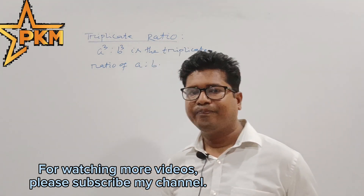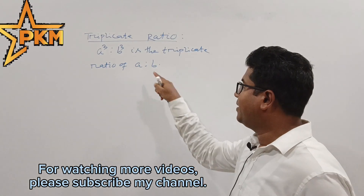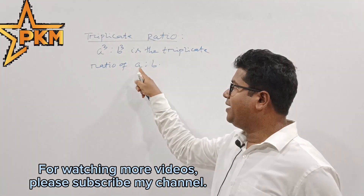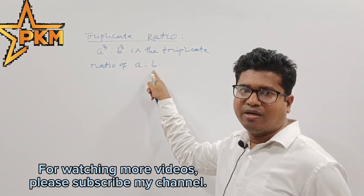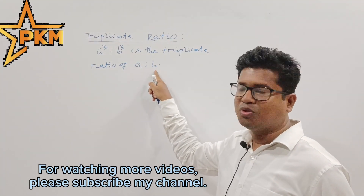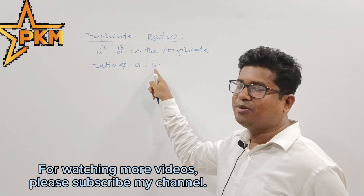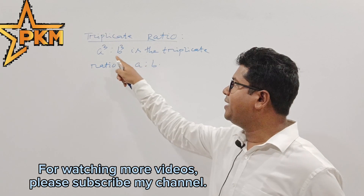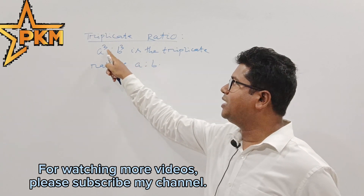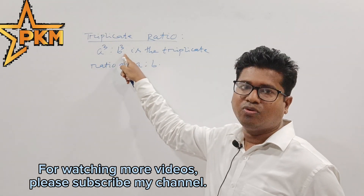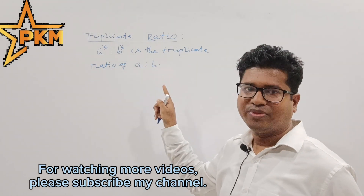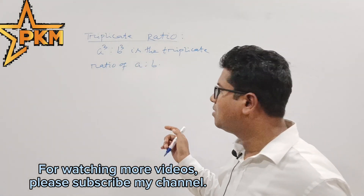For example, if A is to B, then the triplicate ratio is A³ is to B³.